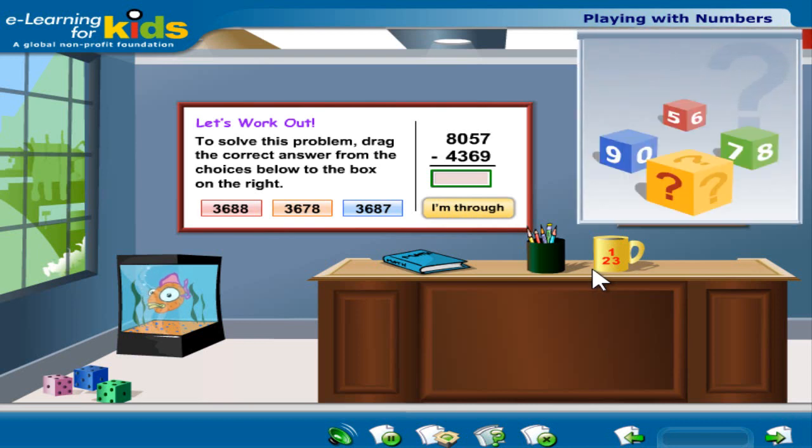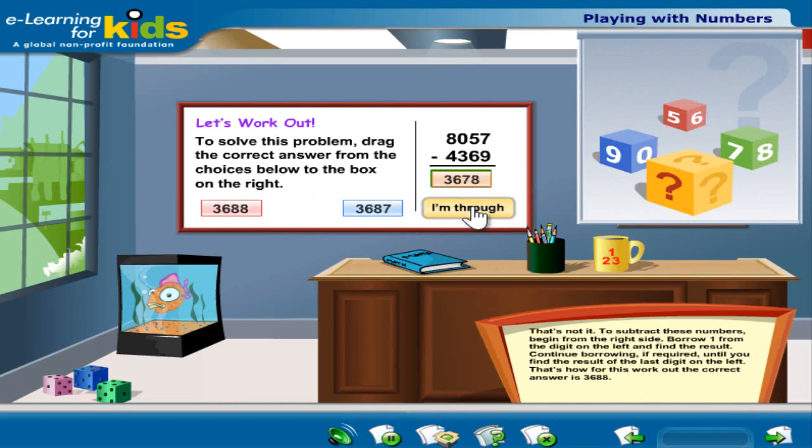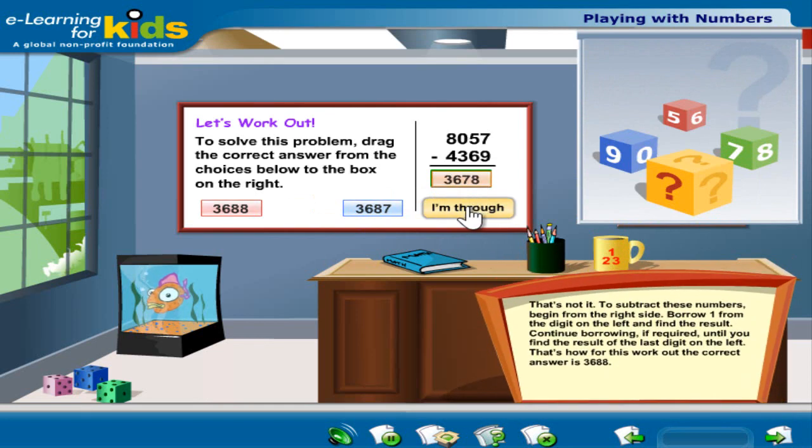Let's try an exercise now. Click I'm through when you are done. That's not it. To subtract these numbers, begin from the right side. Borrow 1 from the digit on the left and find the result. Continue borrowing, if required, until you find the result of the last digit on the left. That's how, for this workout, the correct answer is 3,688.